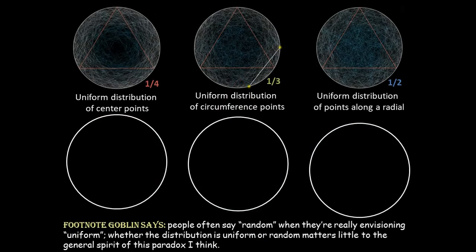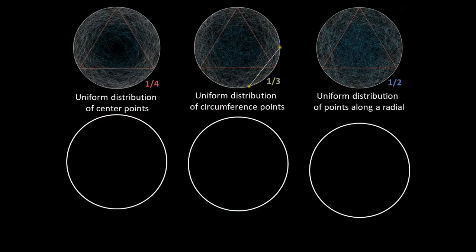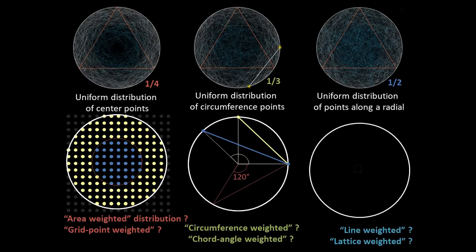Going back to Bertrand's Paradox, I couldn't help but think about how the different ways of drawing chords are like weighted distributions, similar to weighted averages of particle sizes. The questions I wanted to ask are, what would you consider to be the weighting factors that govern the distribution of chords in each of the three examples? And might there be situations in which any one of these options is correct?